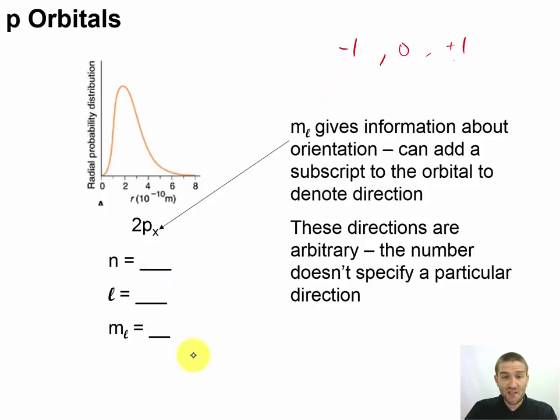Now, let's go ahead and fill this one out. Take a moment, pause the video, and give this one a try. Okay, so in this case, we know our principal quantum number, n, is going to be 2. Now, keep in mind, p, we know that for our second quantum number, l...